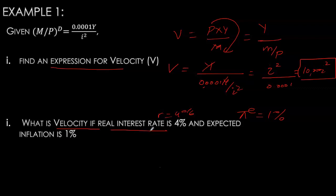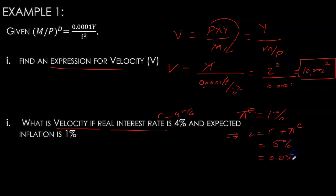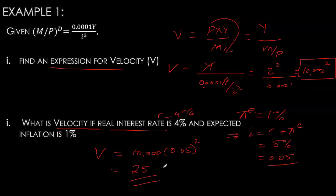To calculate velocity, we use the Fisher equation: nominal interest rate equals real interest rate plus expected inflation. With a real rate of 4% and expected inflation of 1%, the nominal interest rate is 5%, or 0.05 in decimal form. Using the velocity function, we get velocity equal to 25, which is quite close to actual M1 velocity — M1 velocity typically ranges between 10 and 20.